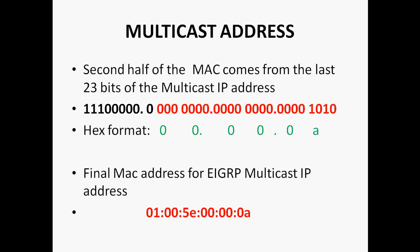To summarize: the first half of the multicast MAC address should always be 01-00-5E. The second half is calculated by converting the multicast IP address into binary format, then taking the last 23 bits and converting them into hexadecimal format. This gives you the complete multicast MAC address for the EIGRP routing protocol.